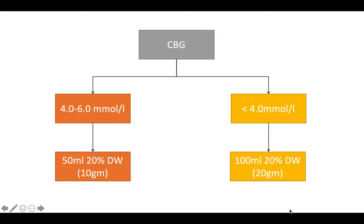Management of hypoglycemia: if CBG is between 4 to 6 mmol/L, give 50 mL of 20% dextrose (10 grams). If below 4 mmol/L, give 100 mL of 20% dextrose (20 grams).